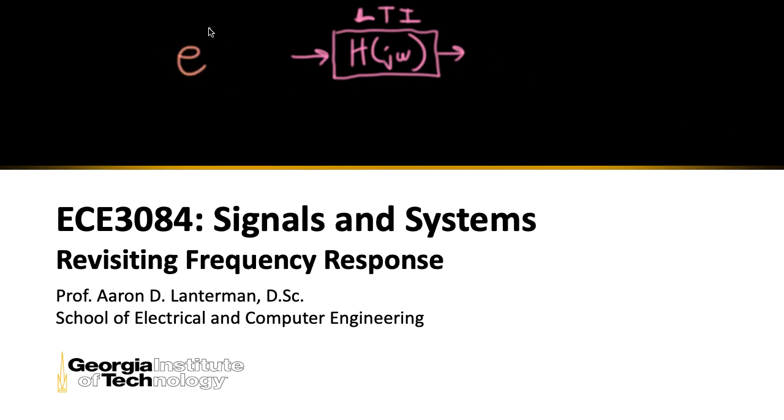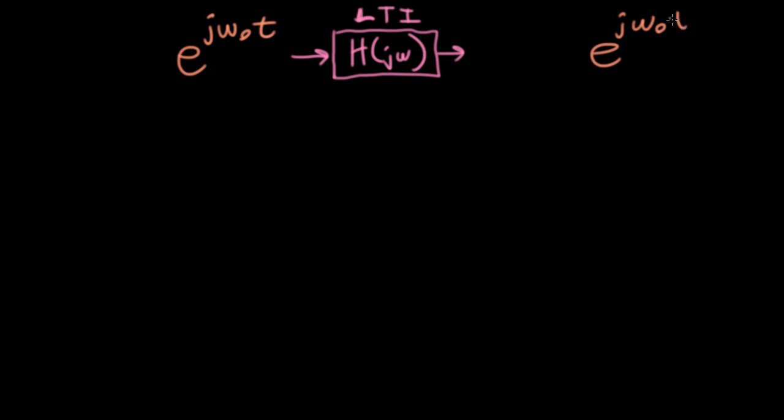If we put e to the j omega naught t into the system, this is a complex valued sinusoid with a real part that's a cosine and an imaginary part that's a sine. We'll get out the same complex sinusoid e to the j omega naught t, except we're going to multiply it by the frequency response evaluated at omega naught.